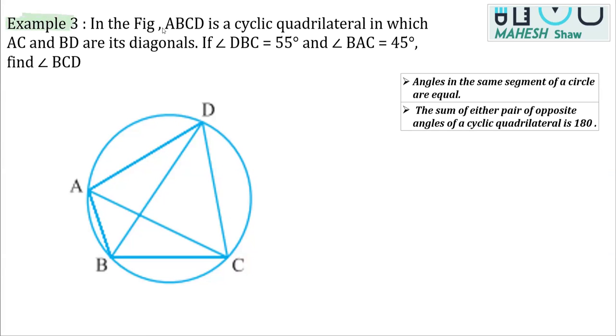This is example number three from the chapter quadrilateral. In the figure, it's given ABCD is a cyclic quadrilateral. Like as you can see, a quadrilateral whose all four vertices are on this circle is called a cyclic quadrilateral.